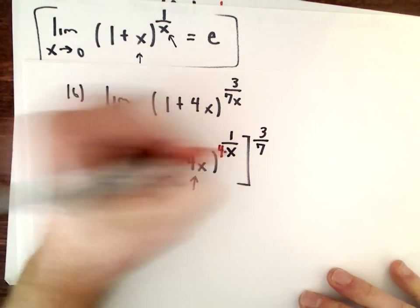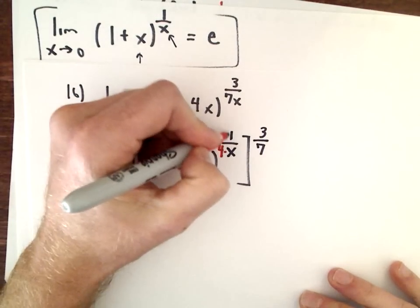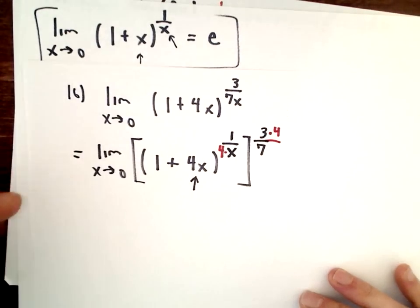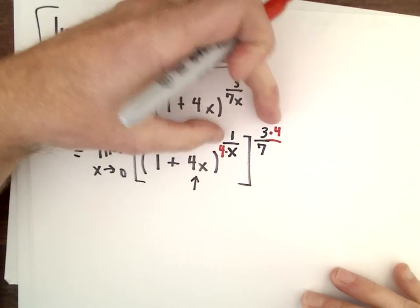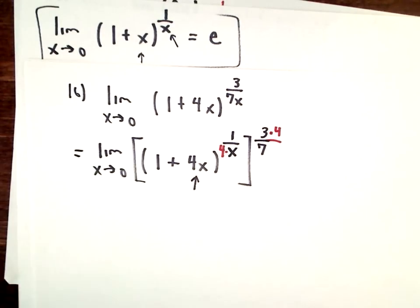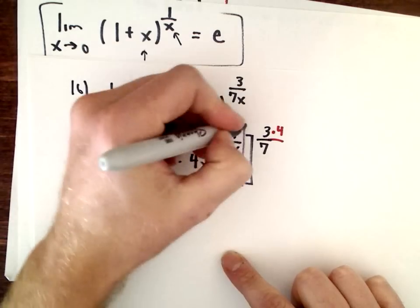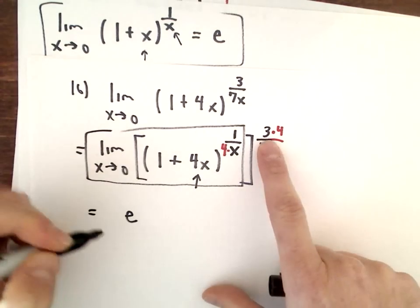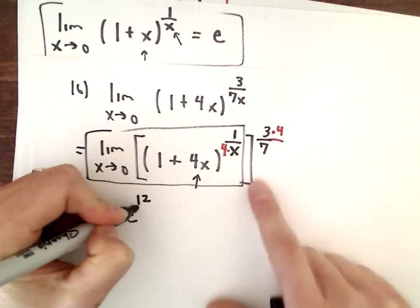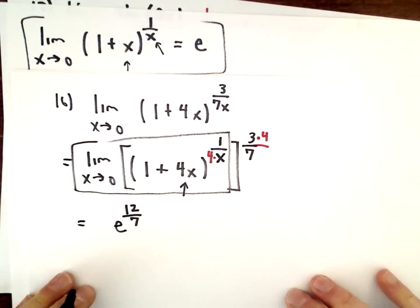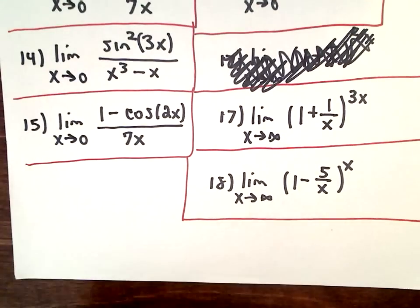If I multiply the denominator by 4, I have to multiply the numerator by 4 as well, but I'll put it outside. The 4s will cancel and I'll still have 3/7x, which is what we started with. This entire limit turns into e, but it's raised to this power of 3 times 4, which is 12 over 7. That would be your answer: e^(12/7).